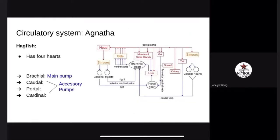The circulatory system of hagfish has four hearts: the branchial, which serves as the main pump, and the caudal, portal, and cardinal hearts that serve as accessory pumps.